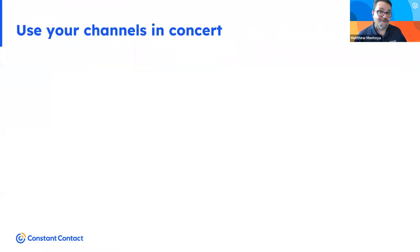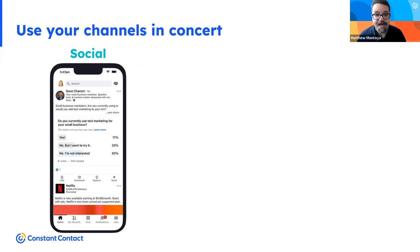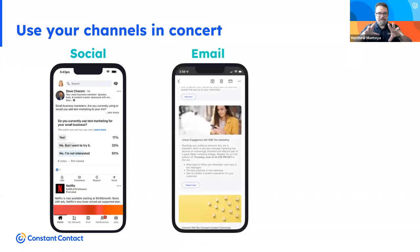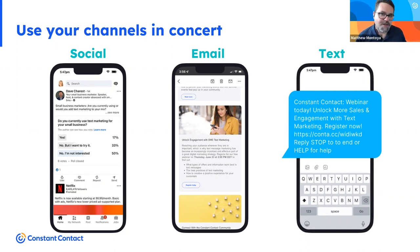Use your channels in concert. Constant Contact did exactly that when we launched our SMS tool. Months before launch, we were engaging people on social media in conversations about text marketing — learning how customers think and what they find valuable. We crafted that into our email marketing and our tool. On email we got more defined, promoting things like a webinar on SMS best practices. Then we used text for immediate information, like reminding people the webinar was about to start. You can take one concept and broaden it across different channels to communicate more deeply in the way each channel is best utilized.